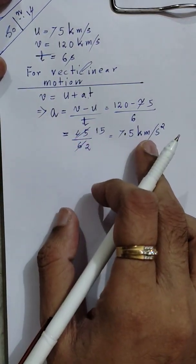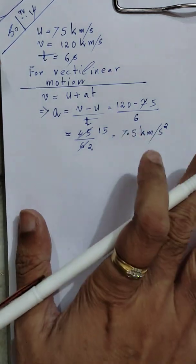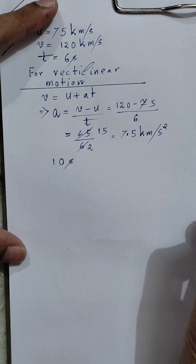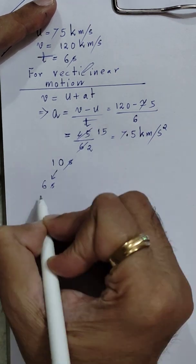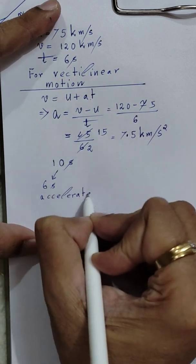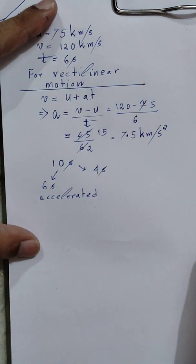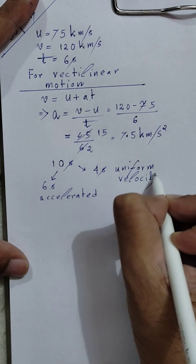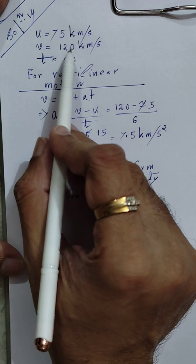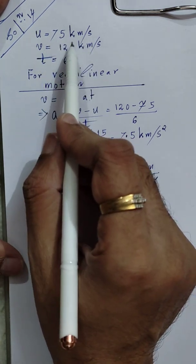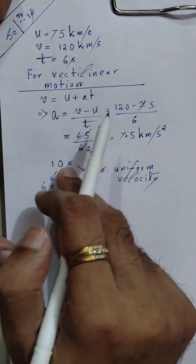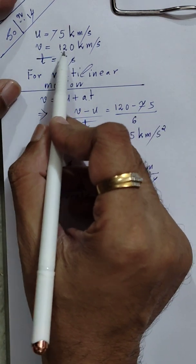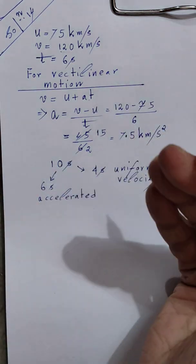The spacecraft moves in a straight line with this acceleration. The rocket motors were fired for 6 seconds. So out of the total 10 seconds, for the first 6 seconds the spacecraft accelerated, and for the remaining 4 seconds the spacecraft moved with uniform velocity, because the acceleration occurred only for 6 seconds. After 6 seconds, the final velocity was 120 km/s, so it continued at 120 km/s for those 4 seconds.